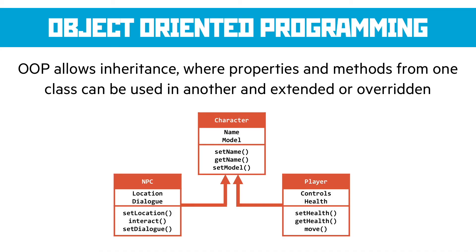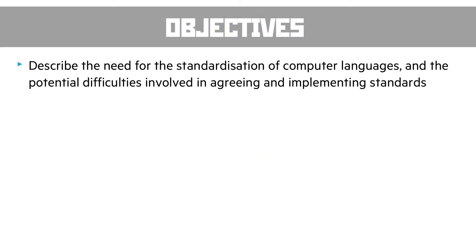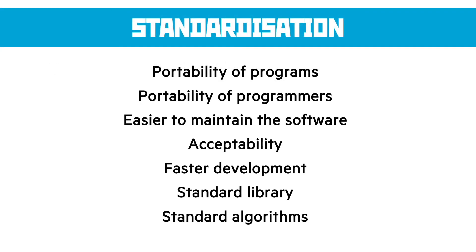The next objective is to describe the need for standardization of computer languages and the potential difficulties involved in agreeing and implementing those standards. There are a bunch of reasons we need standards. Portability of programs — if you have a standard way of doing something, that program can be ported to different hardware products. Programmers are also more portable — if it's a standard way of working, you can move between different projects. Standardization also makes it easier to maintain software because more people understand it and there's a formal specification for how it should be written and how it should interact.